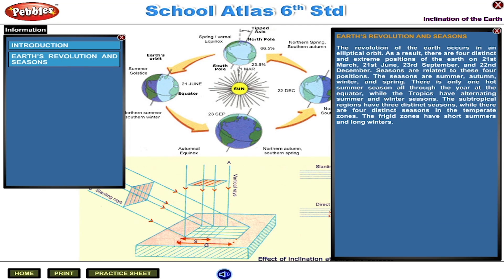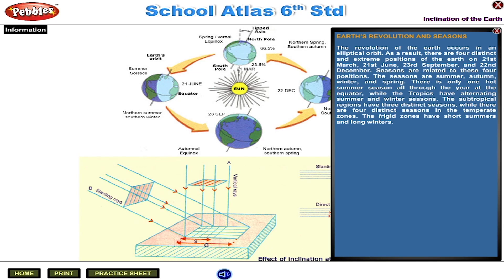Earth's Revolution and Seasons. The revolution of the Earth occurs in an elliptical orbit. As a result, there are four distinct and extreme positions of the Earth on 21st March, 21st June, 23rd September, and 22nd December. Seasons are related to these four positions: Summer, Autumn, Winter, and Spring. There is only one hot summer season all through the year at the equator, while the tropics have alternating summer and winter seasons. The subtropical regions have three distinct seasons, while there are four distinct seasons in the temperate zones. The frigid zones have short summers and long winters.